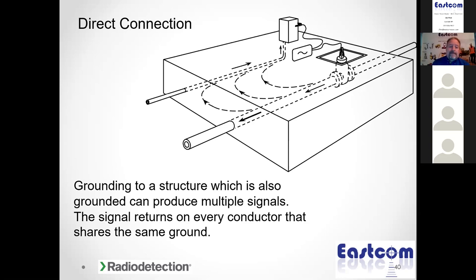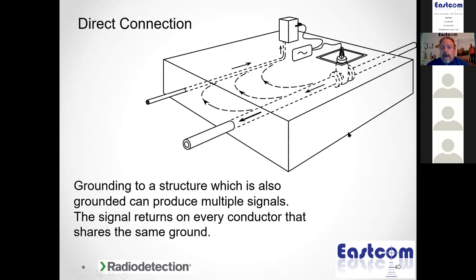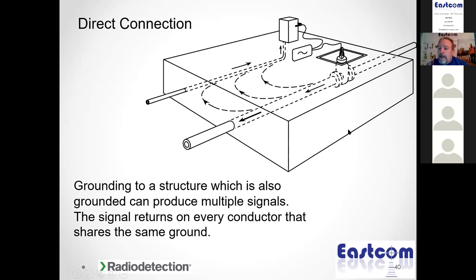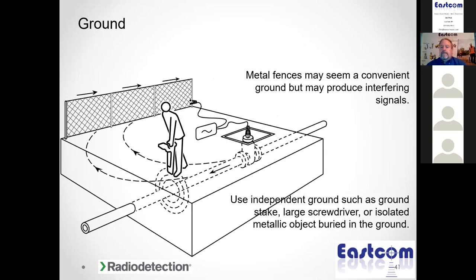When you use another utility as a ground, you're going to have signal on it and that can confuse your locate — so use that independent ground rod. Fences and guard rails work as grounds unless they're too close to your utility, in which case your receiver will be pulled toward them and you'll get interference.